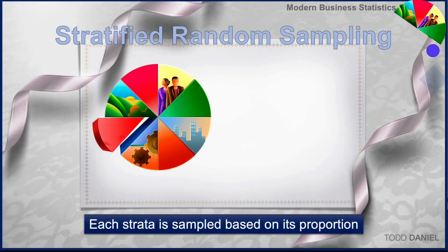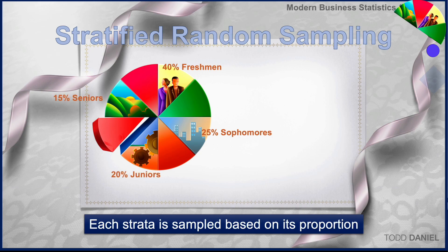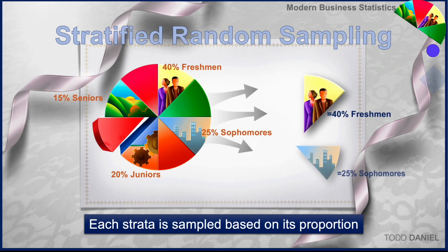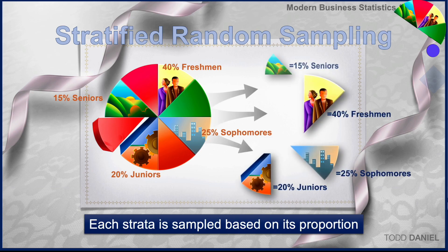For instance, at our university, we have proportions for class standing. Let's say that it's 40% freshmen, 25% sophomores, 20% juniors, and 15% seniors. This would be a proportionate stratified random sample. We would draw our sample to make sure that our sample represented exactly the same proportions as we know exist within our population.